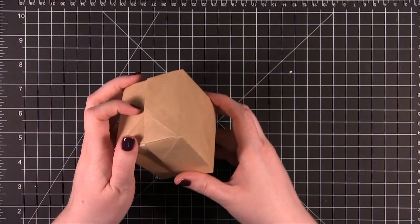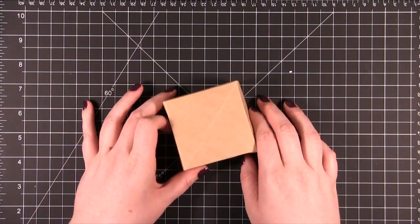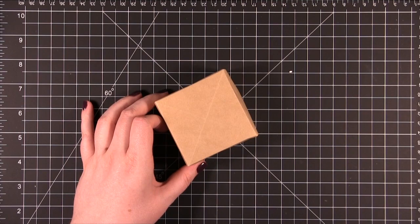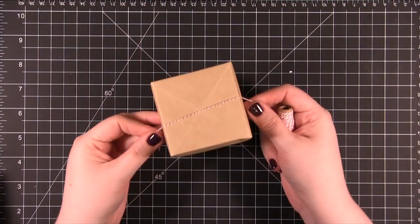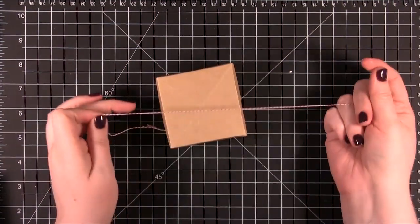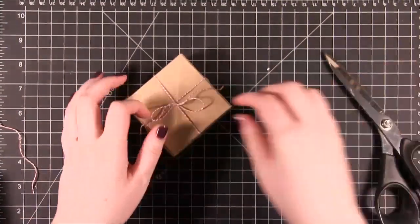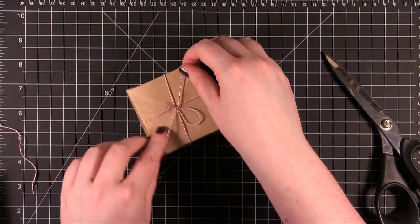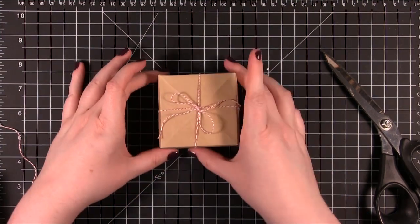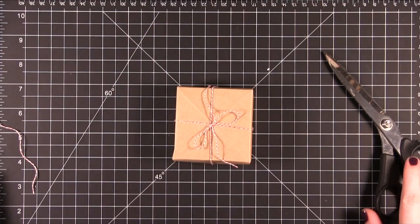So now that we've got our box I'm going to go ahead and start decorating. It would be really fun just to take some baker's twine and just tying it in a little bow on top. So that would be a super cute gift right there.